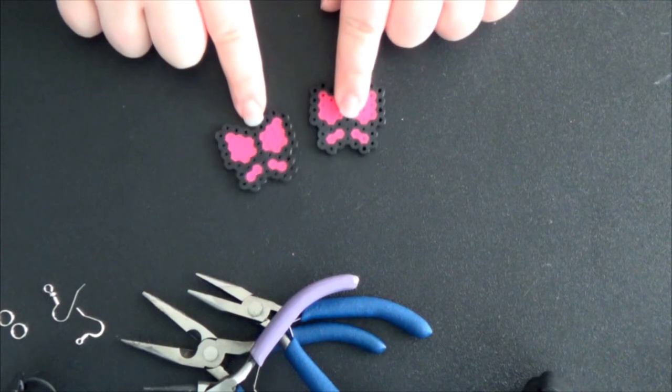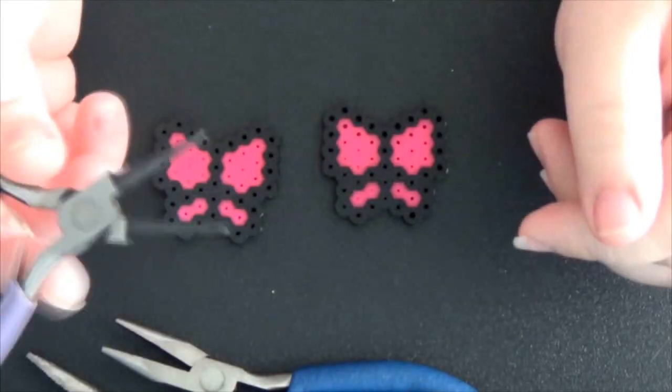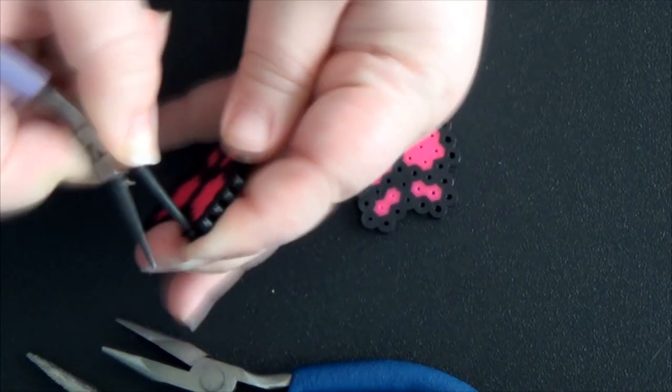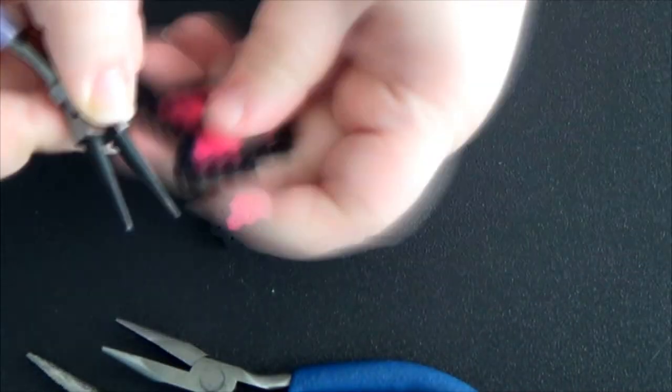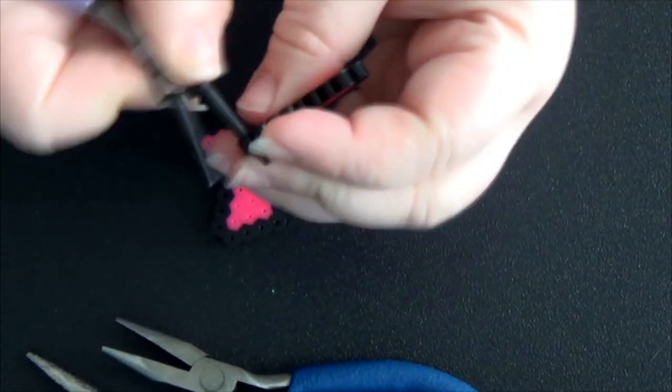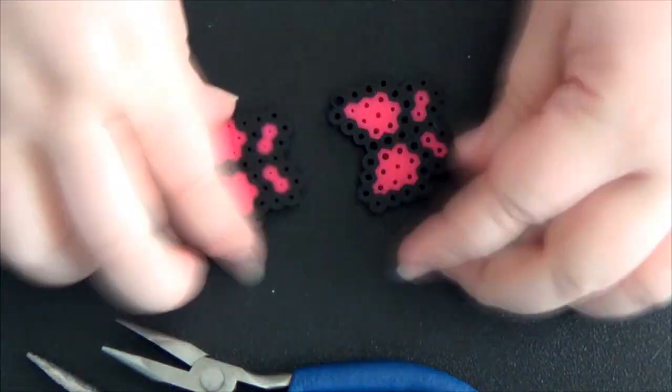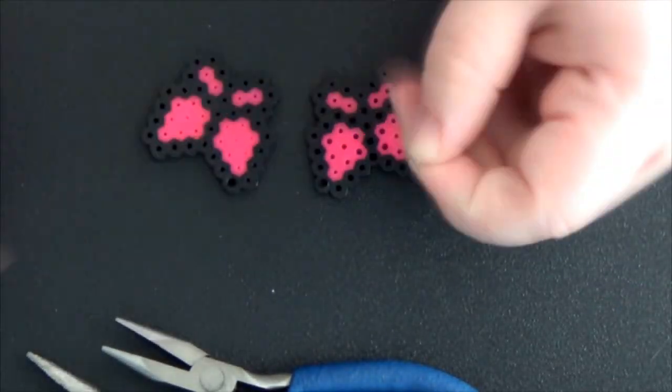Now we're going to take those round nose pliers and poke a hole into one of the corners of our butterflies. I don't know what it is about using the corner for earrings - I just think it's super cute.